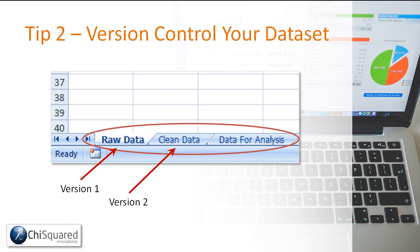When you're ready to start preparing your data for analysis, you can make a clone of that data and prepare it — this is version three — and you can go on and have lots of different versions. The reason version controlling your data set like this is important is if you make a mistake in a later worksheet, you can always revert back to a previous worksheet. If you're working in one single sheet called 'raw data' and you make a mistake, you might not be able to undo that mistake and you might lose your entire data set.